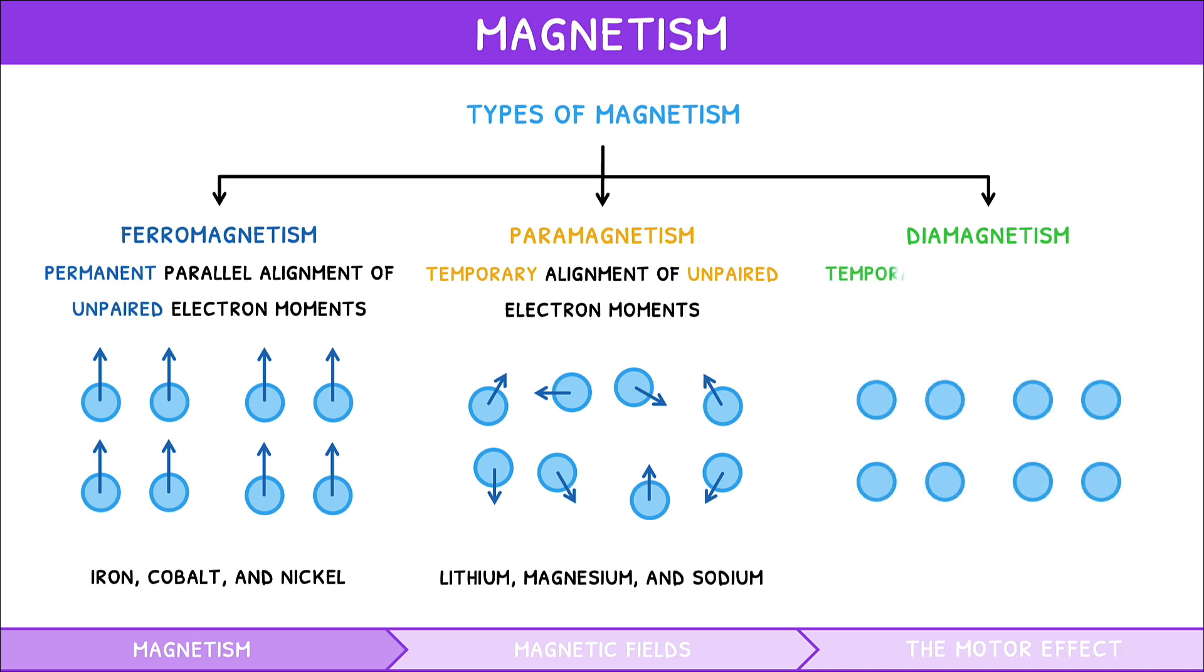Diamagnetism is the temporary alignment of paired electron magnetic moments by an external magnetic field. Common elements that have this are copper, silver, and gold.